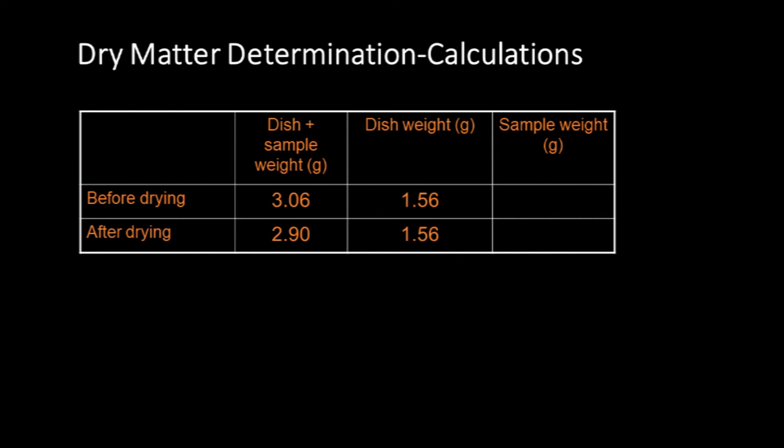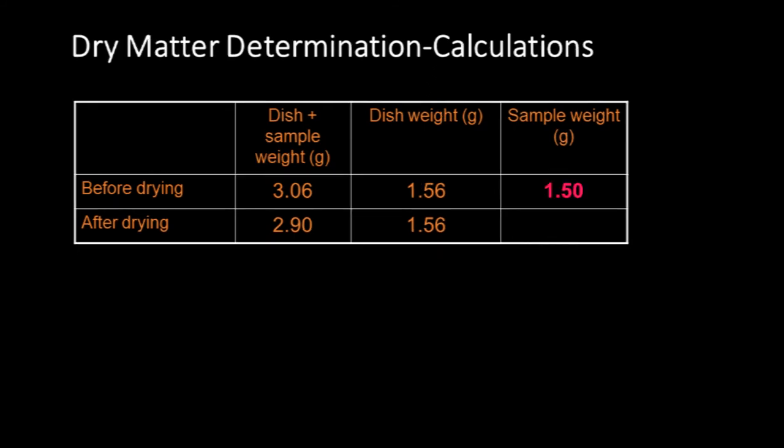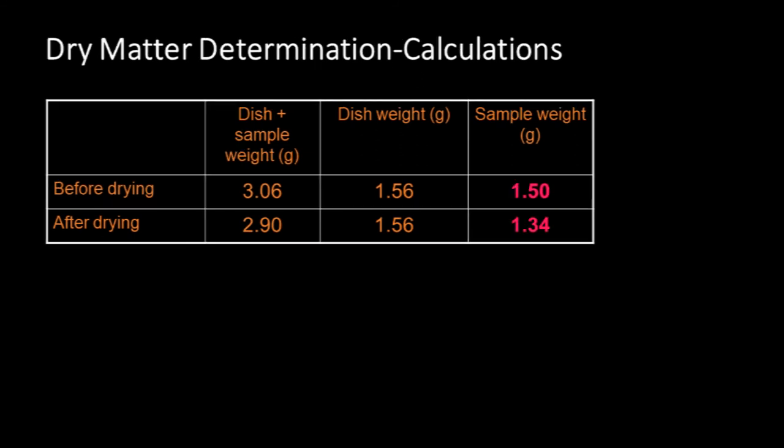Now subtract the dish weight from the dish plus sample weight and the answer is 1.50 grams. So this is the weight of fresh sample before drying. Then in the same way, subtract the dish weight from the weight after drying and the answer is 1.34 grams. So this is the weight of sample after drying.